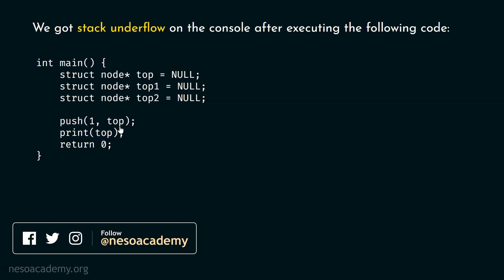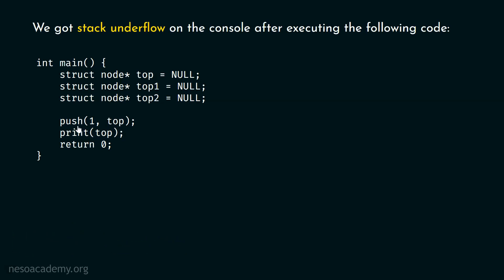Here, we are passing the top pointer to this push function — not only the data, but the top pointer itself. This is what we learned in the previous presentation. If we pass the top pointer to the push function, it is better because we need to pass top one and top two later. That's why it is better to pass them locally to the functions, so that we can perform operations on the temporary stacks as well.